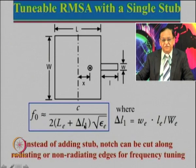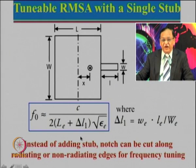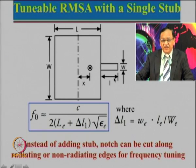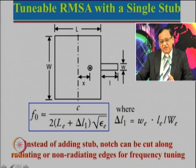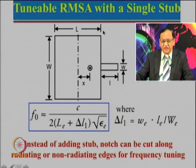Suppose we got 1.05 gigahertz earlier and want 1 gigahertz. We put 1 gigahertz in the formula, we know L_effective, we find the corresponding delta L1, and from that determine the finite length and width of the stub. This stub can always be cut or extended a little more to fine-tune the frequency. Additionally, the effective length is now increased on one side, so the zero axis of the field will be slightly shifted.